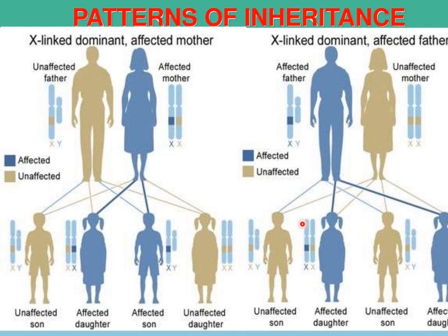In the second X-linked dominant scenario, the father is affected. Father's affected X chromosome will always pass to daughters, never to sons, because sons only get Y from their father and X from their mother. Since the mother is unaffected here, both sons are normal. Both daughters, however, are affected because they each receive the dominantly affected X chromosome from their father.